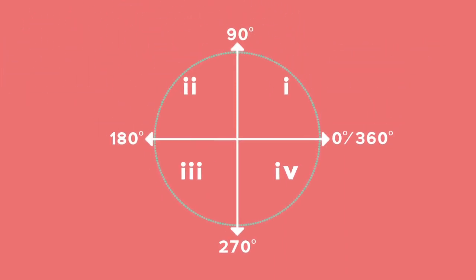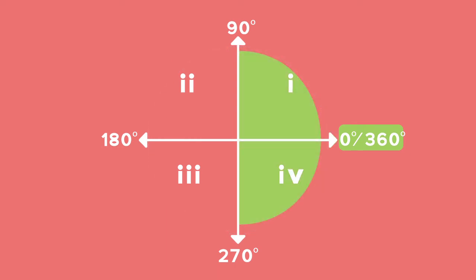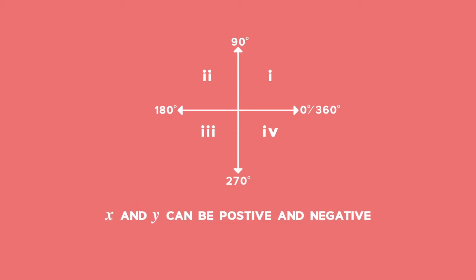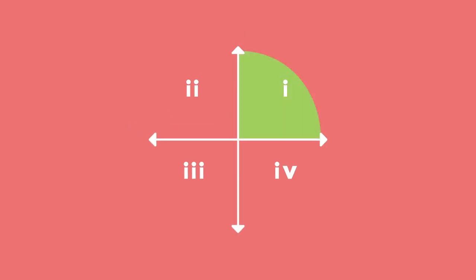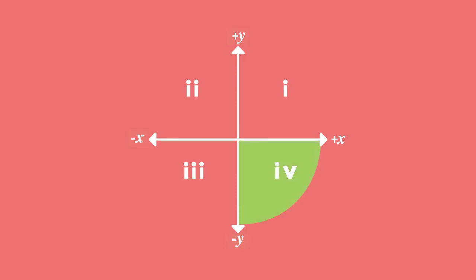The 0 degrees and 360 degrees share the same axis in the first and fourth quadrant. Notice that the radius will always be positive. However, the values of x and y change depending on the position of the point on the Cartesian plane. In the first quadrant we have positive x values and positive y values. In the second quadrant we have negative x values and positive y values. In the third quadrant we have negative x values and negative y values. And in the fourth quadrant we have positive x values and negative y values.